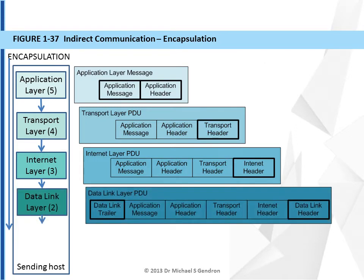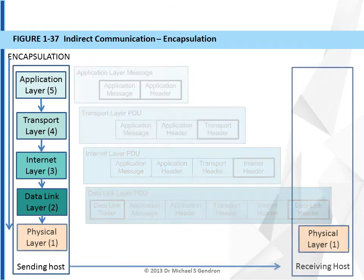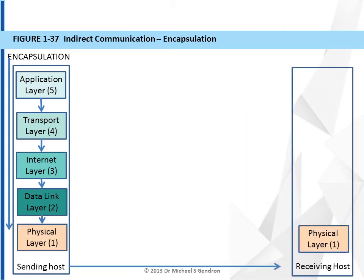The internet layer will send its PDU to the data link layer. The data link layer will create a PDU which contains the internet layer PDU as its payload, and it will append a data link header and a data link trailer. The data link layer will then send its PDU to the physical layer, and the physical layer will propagate the message across the network to the receiving host, where the physical layer will recreate the message and the process of decapsulation will begin.